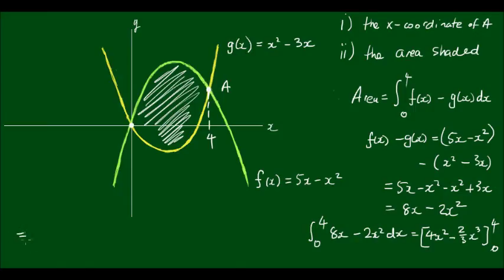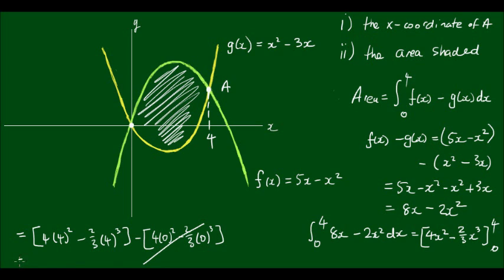It looks a bit messy but I apologize for that. So subbing in these values I will get 4 times 4 squared minus 2/3 of 4 cubed minus 4 times 0 squared minus 2/3 of 0 cubed. And obviously this side goes to 0. And we're left with 4 times 16 minus 2/3 times 4 cubed is 64. So 4 times 16 is 64. And we're left with 2/3 of 64.